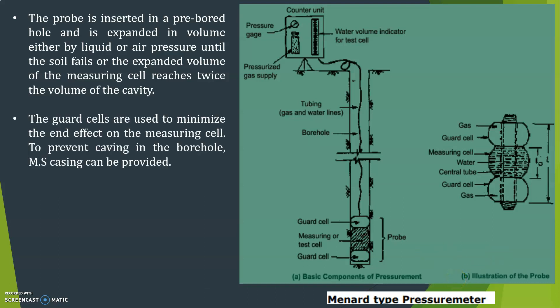The guard cells are used to minimize the end effect on the measuring cell. To prevent caving in the borehole, MS casing can be provided, means mild steel casing can be provided in order to avoid the caving. The bottom of the casing is kept at least 1 meter above the desired test depth.